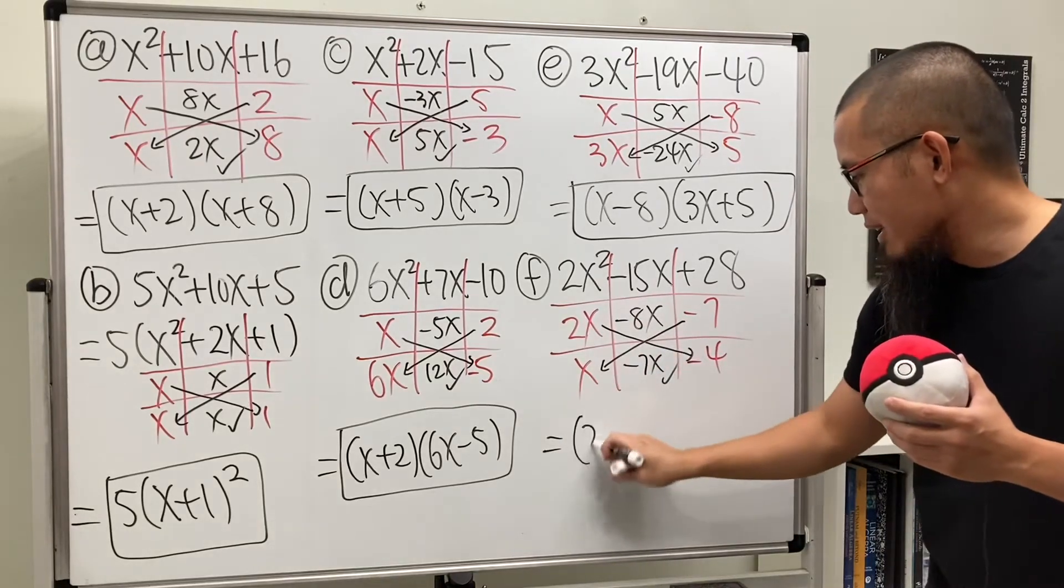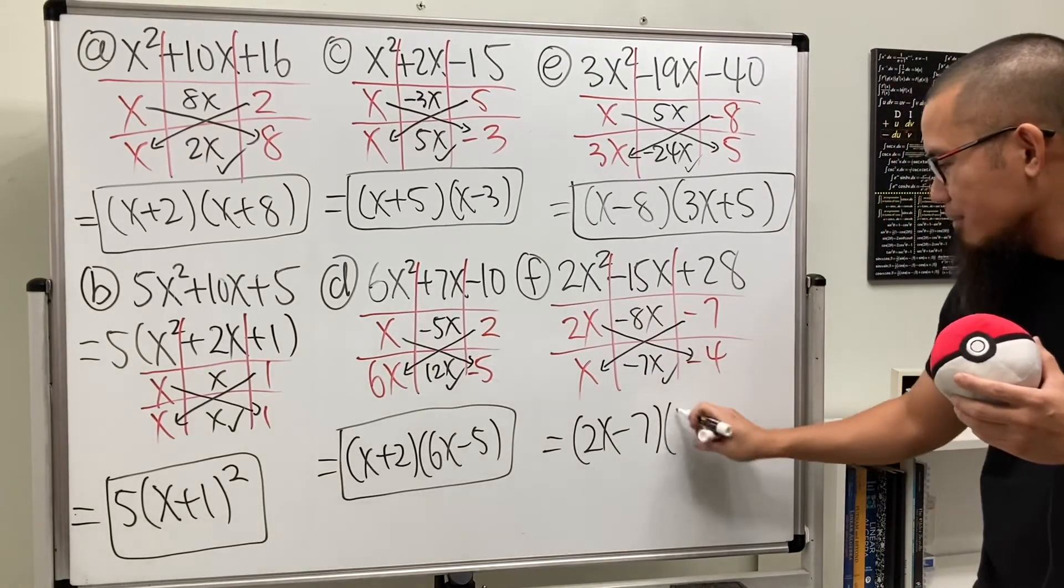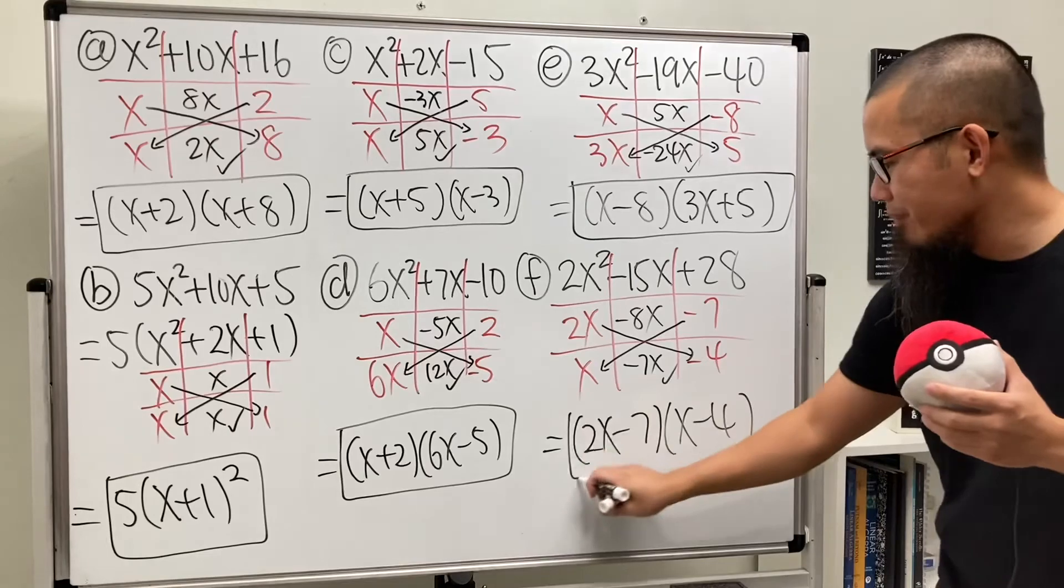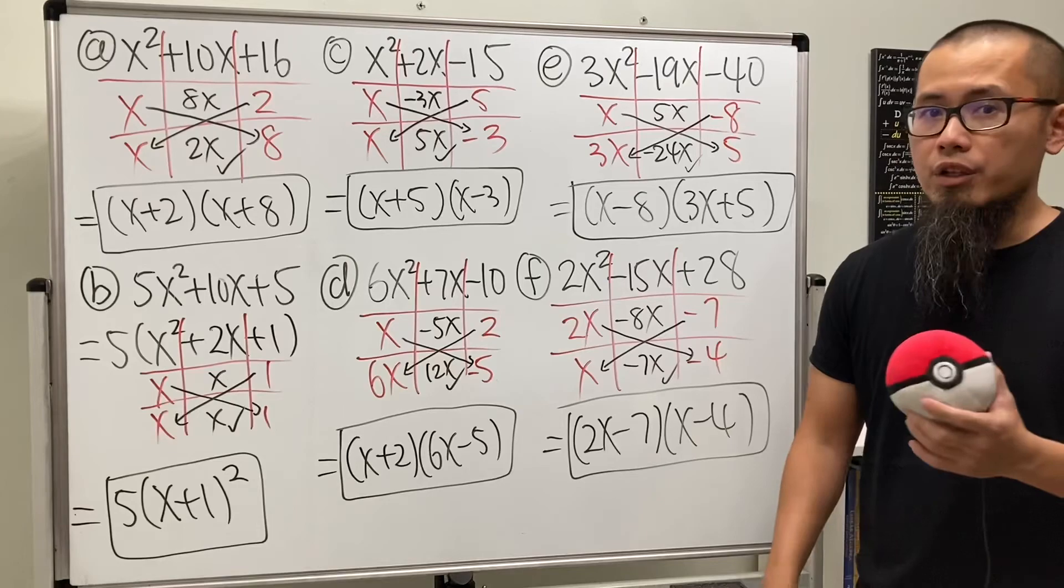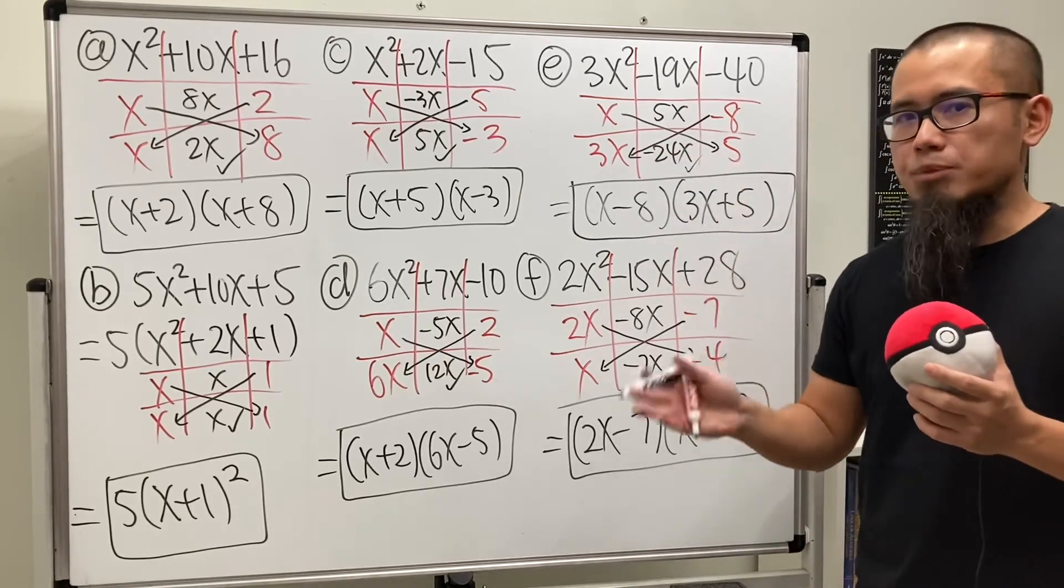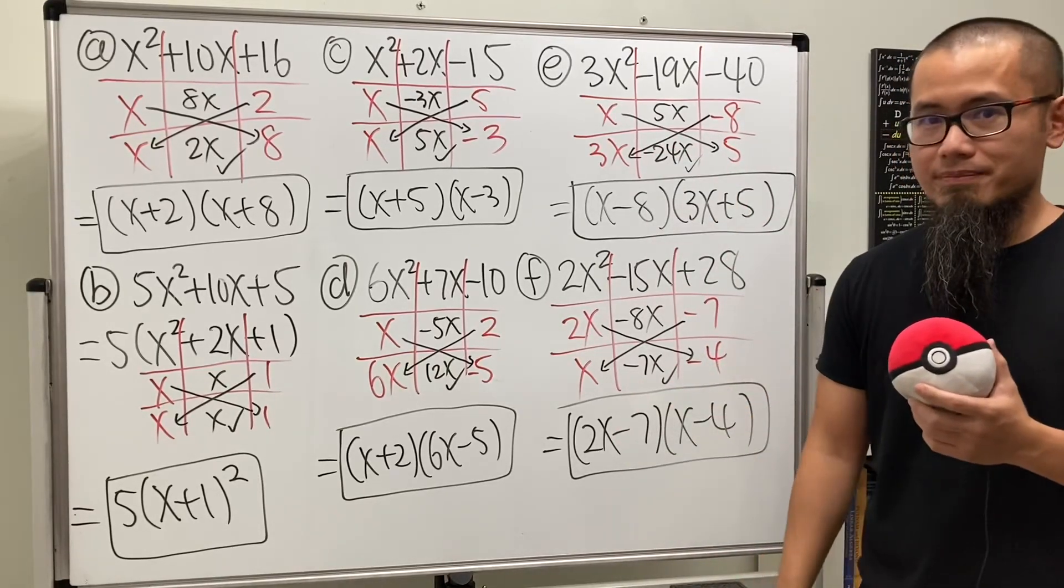So the answer is 2x minus 7 times x minus 4. Alright. So hopefully this video helps. If you guys need more help with algebra, you guys can check out my other video and subscribe to my channel for future videos. That's it.